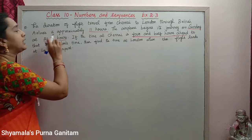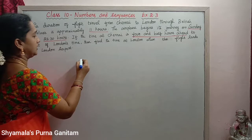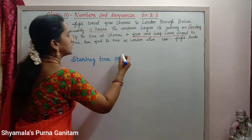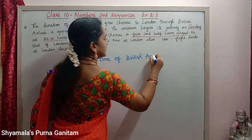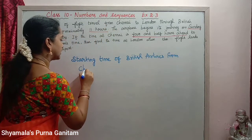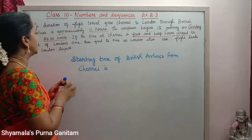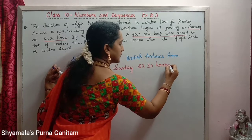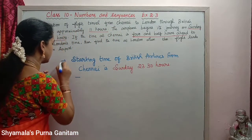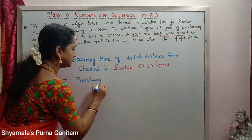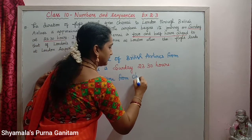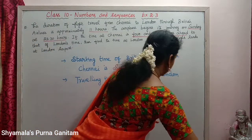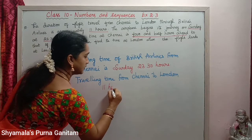Three things are given. Starting time of British Airlines from Chennai: Sunday 23:30 hours. Travelling time from Chennai to London: 11 hours. And Chennai time is 4 and a half hours ahead of London time.